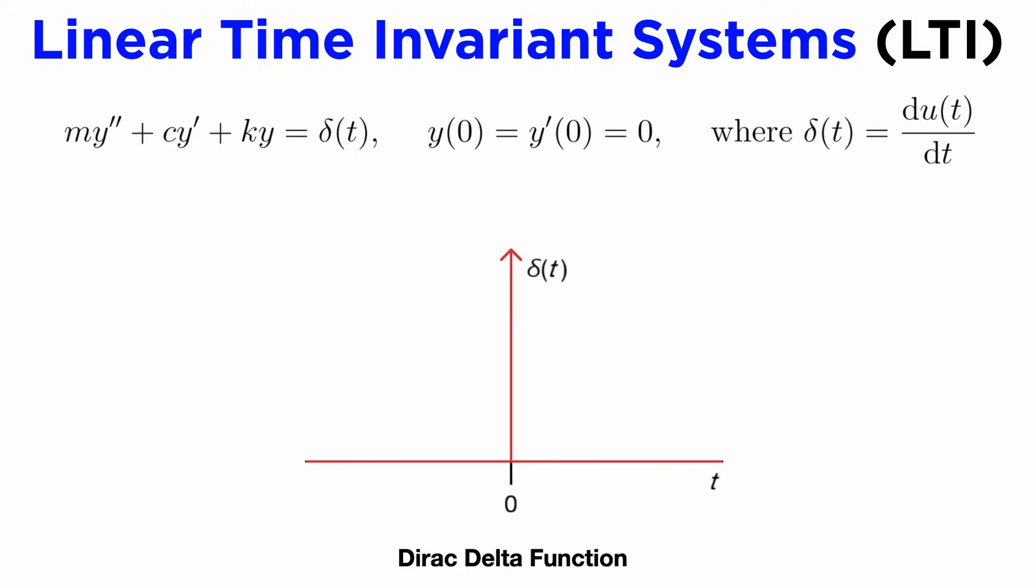We will now connect the Laplace transform to the notion of an LTI system more formally. One of the defining properties of the Dirac delta function is that the area under its spike is equal to one. This is another fact that is a little hard to understand, but it can be thought of as saying that the graph of the Dirac delta function is like a rectangle of area one whose width has been shrunk to be infinitely thin, while its height has been stretched to be infinitely tall. This allows us to say that the integral of the Dirac delta function over any interval containing the spike is one, and zero otherwise.